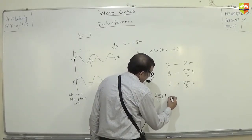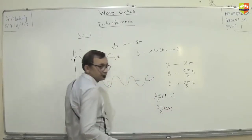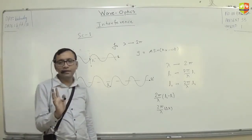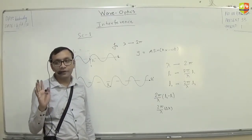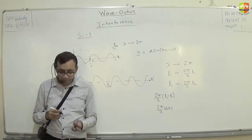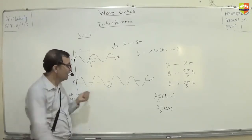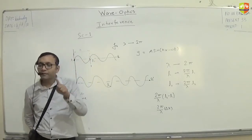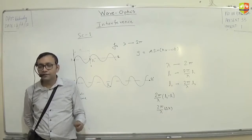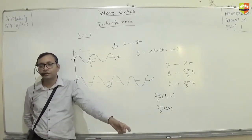L2 minus L1 is the path difference. Always remember: 1 wavelength corresponds to 2π phase, and 2π phase corresponds to 1 wavelength. This relation is important because when solving questions it becomes easy to calculate path difference, and then you convert it to phase difference using this relation and put it in the formula. First calculate the path difference, then find the phase difference.